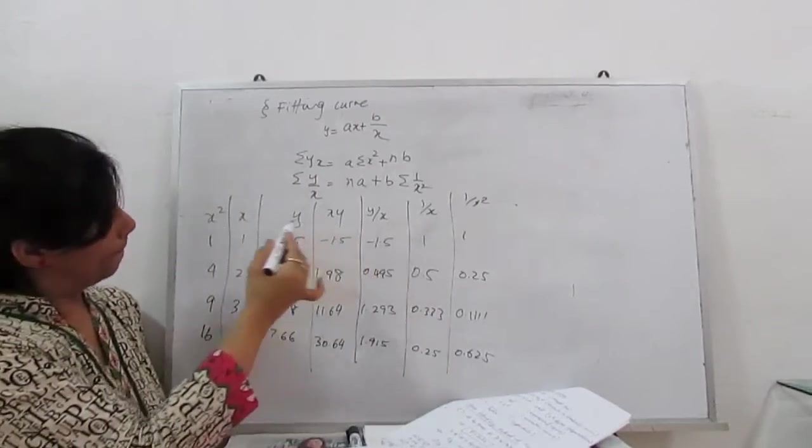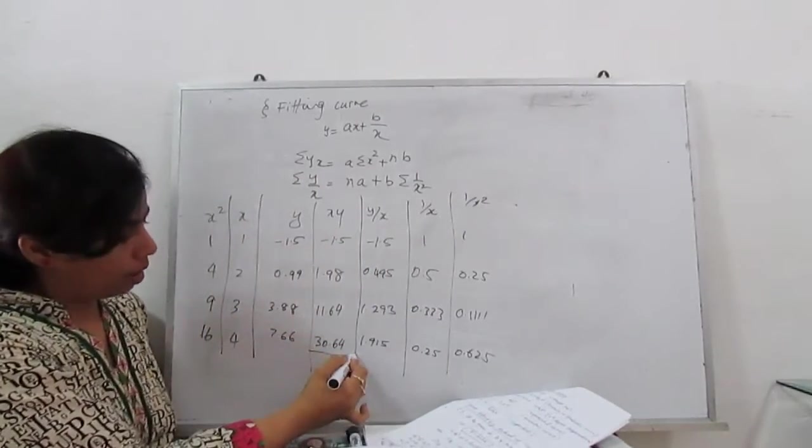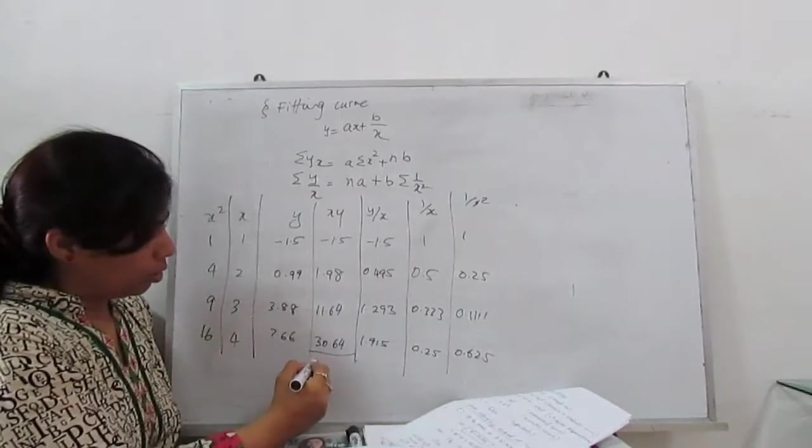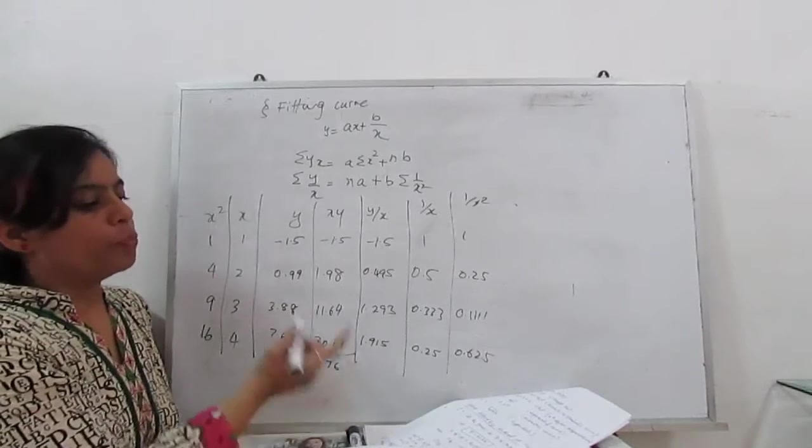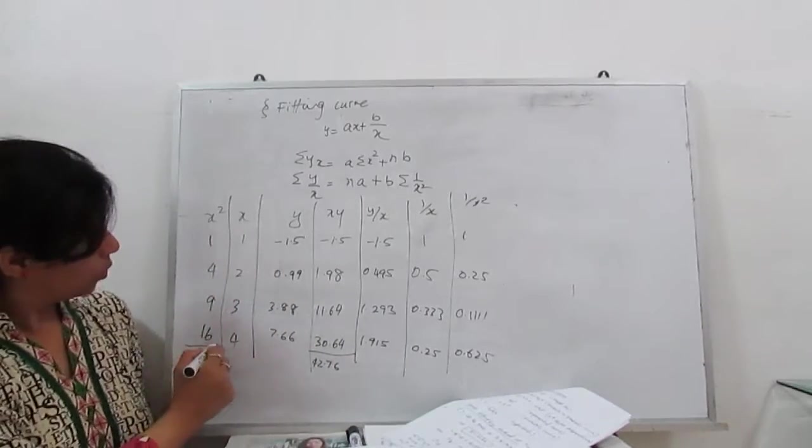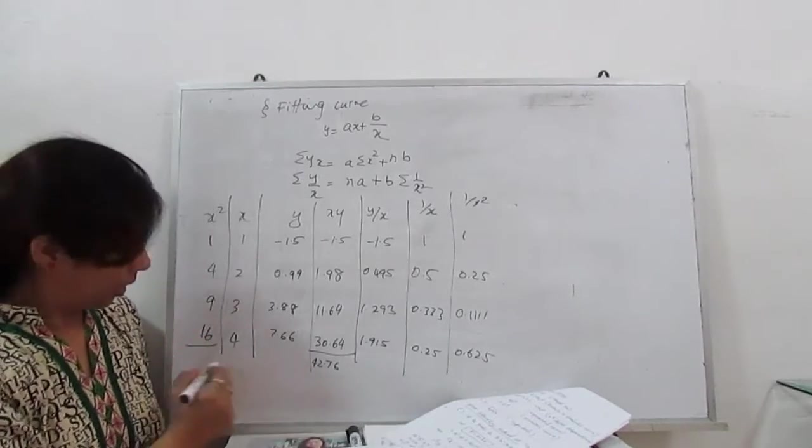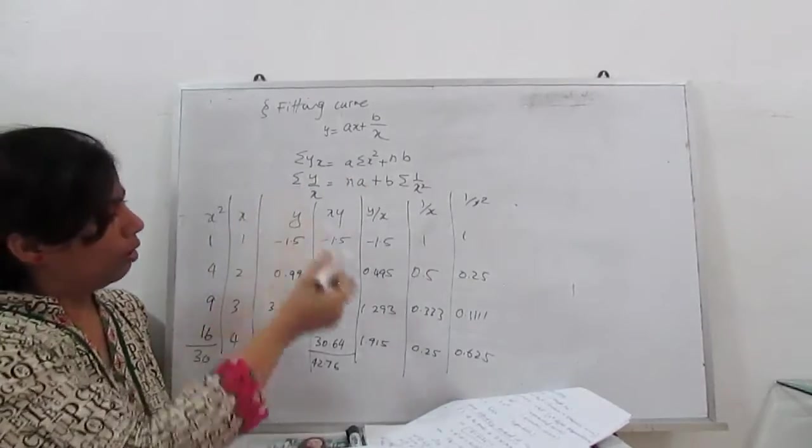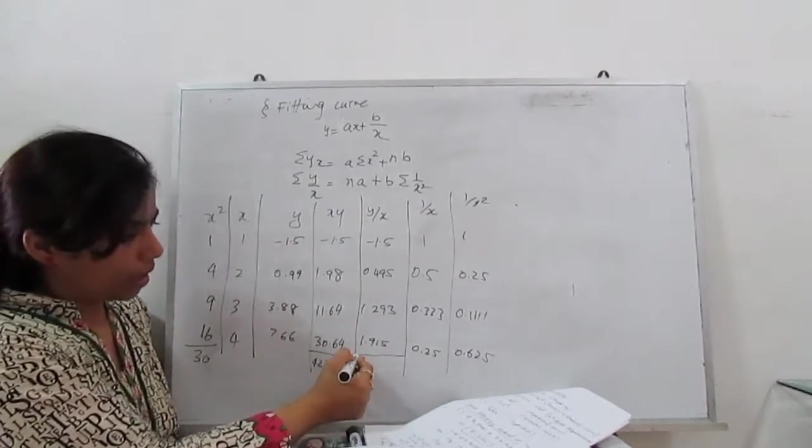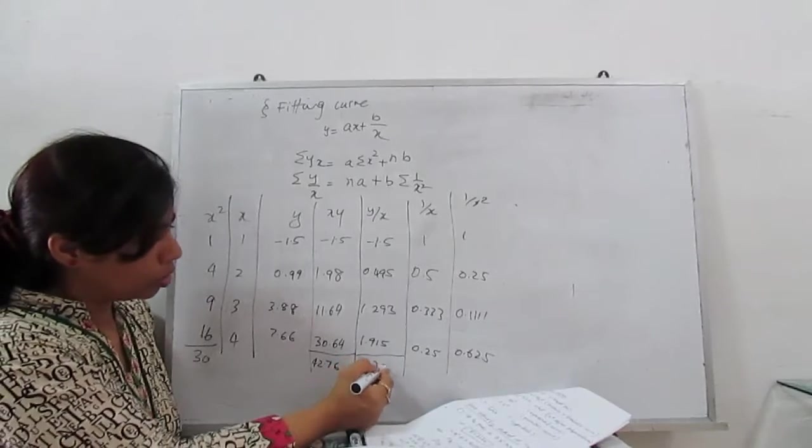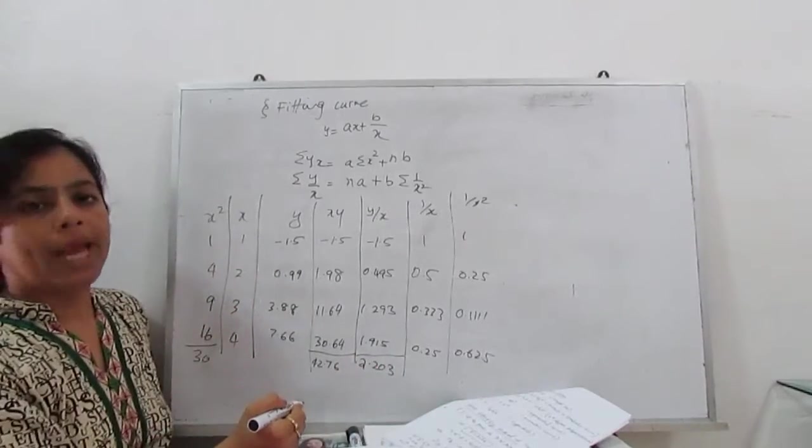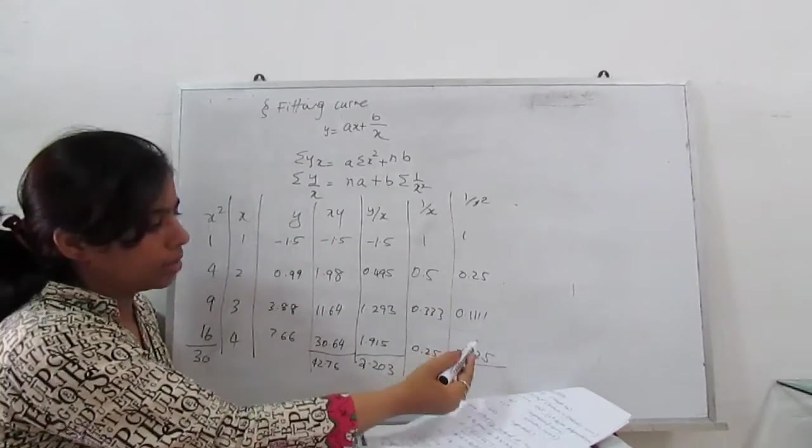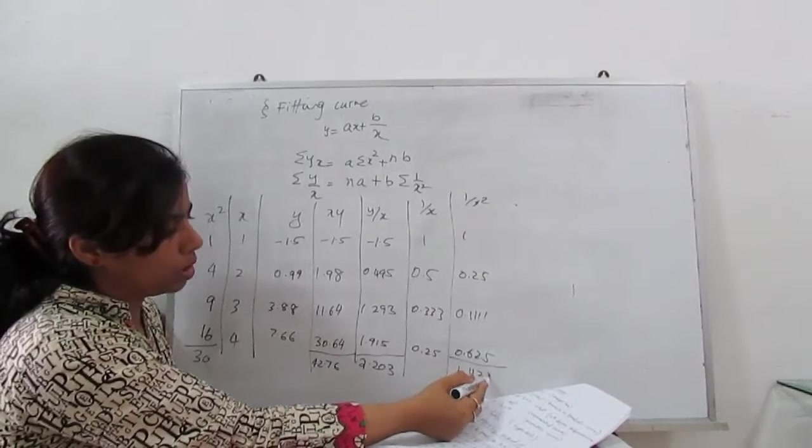Next, we need summation x into y. Sum of this term is 42.76. Then summation of x square. Summation of x square is 30. And here n is 4. Summation of y by x is 2.203. Next, we need summation 1 by x square. 1 by x square is 1.4236.